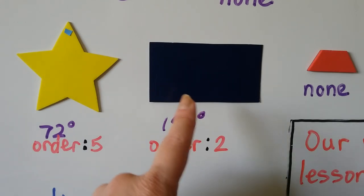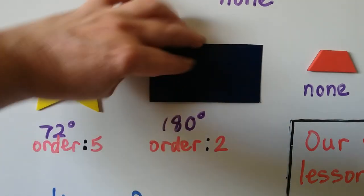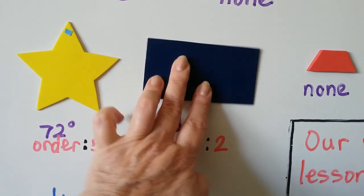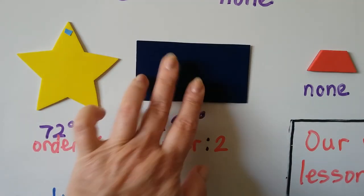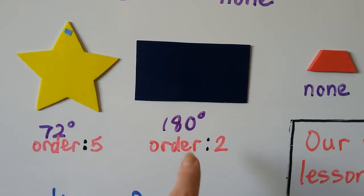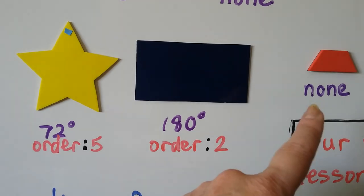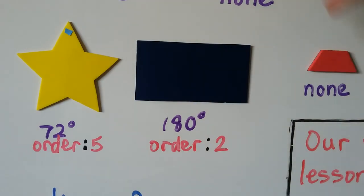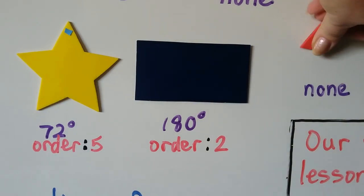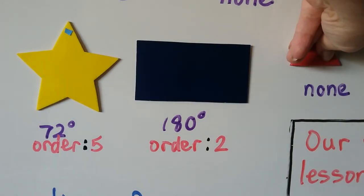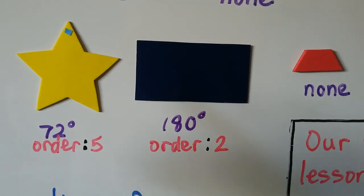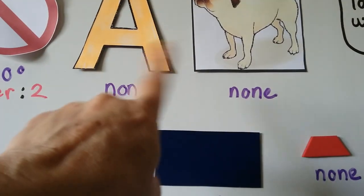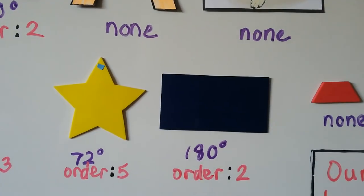For this rectangle, I can flip it 180 degrees and it'll have the same orientation — it's an order of 2, and it has two lines of symmetry. And for this trapezoid, it's got none. I would have to flip it 360 degrees in order for it to have the same orientation, so it's like the pug and the letter A — it has none.